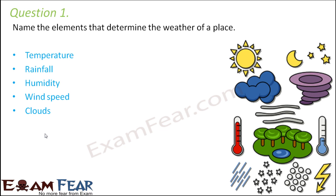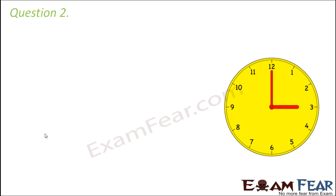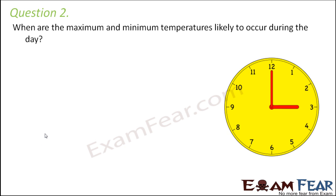Question number two: when are the maximum and minimum temperatures likely to occur during the day? Maximum temperature happens in the afternoon. This variation of temperature throughout the day occurs due to the rotation of the earth — as the earth rotates, different parts get exposed to the sun at different intervals of time.